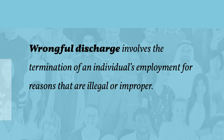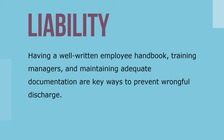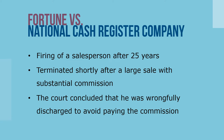Employers that run afoul of employment at will restrictions may be guilty of wrongful discharge, which involves the termination of an individual's employment for reasons that are illegal or improper. Employers can take several precautions to reduce wrongful discharge liabilities. Having a well-written employee handbook, training managers, and maintaining adequate documentation are key ways to prevent wrongful discharge. A landmark court case regarding wrongful discharge was Fortune v. National Cash Register Company in 1977.